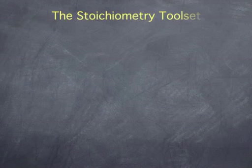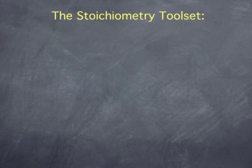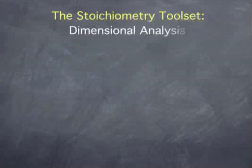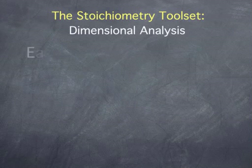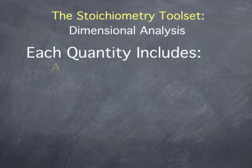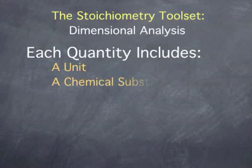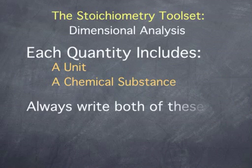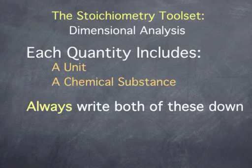Stoichiometry provides a set of tools that chemists use to manipulate quantities of substances. In working with chemical quantities, it is important to remember that each quantity has associated with it both a unit and a chemical substance. And it is important to always write both of these down.